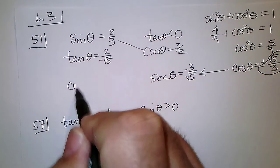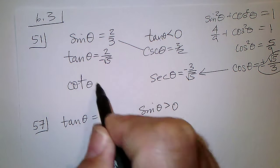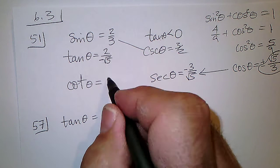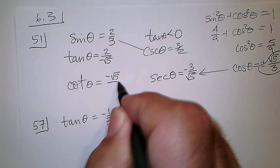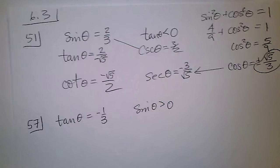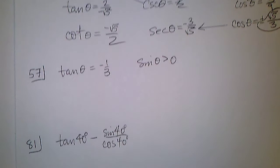And the cotangent of the angle would be the reciprocal of this, negative square root of 5 over 2. Okay, now what if the tangent was 1/3?